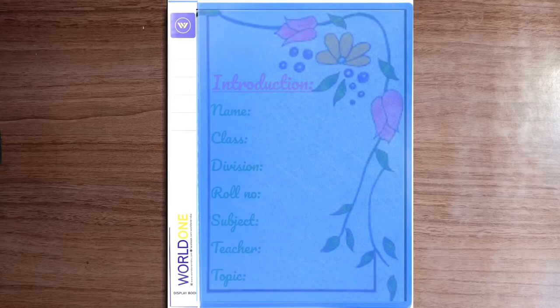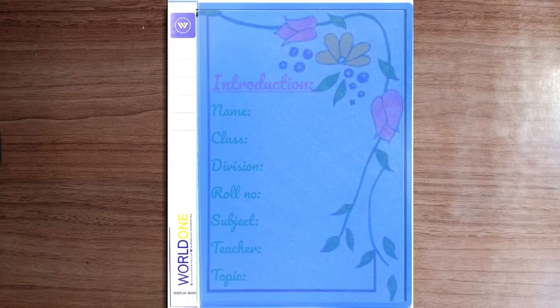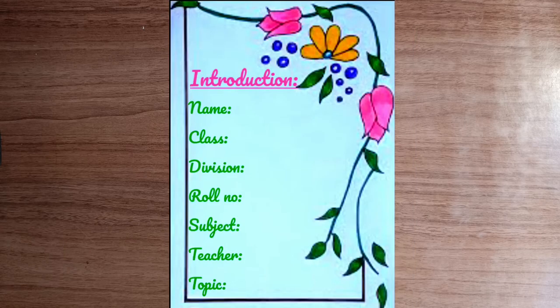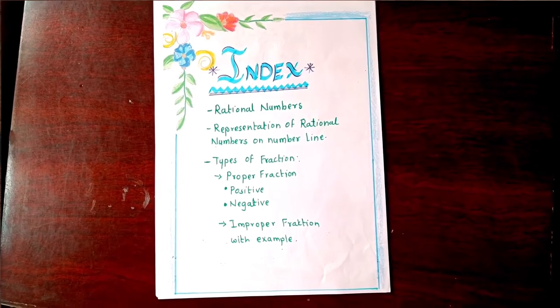Hello friends, today I am going to show you a maths project. This is a project on representation of rational numbers on number line. Let's see the inside pages of the project. The first page is introduction, with name, class, division, roll number, subject, teacher, and topic. The next page is the index.